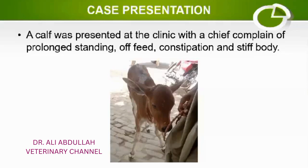The case was of a calf presented at the clinic with a chief complaint of prolonged standing, off feed, constipation, and stiff body. These four signs were the chief complaint from the owner. From these complaints, we can see that this animal is suffering from stiffness of the body and constipation.